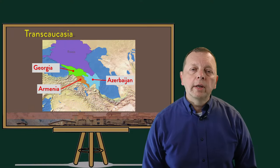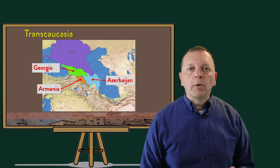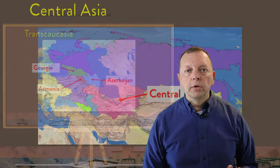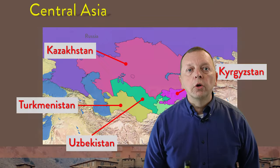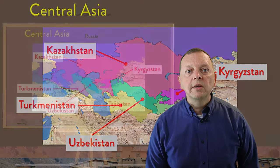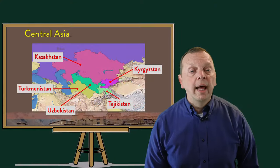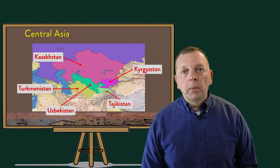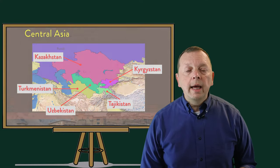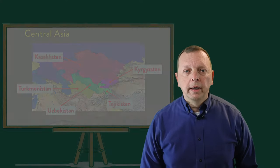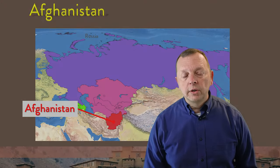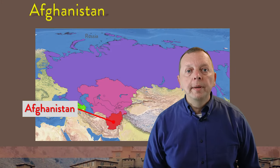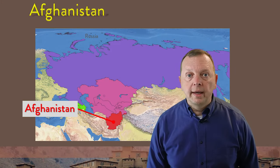We're also going to be looking at the five former republics of Central Asia, which are Kazakhstan, Turkmenistan, Uzbekistan, Tajikistan, and Kyrgyzstan. All of these former republics today are independent countries. And while it wasn't a Soviet republic, in our discussion on Central Asia, I'm going to be including Afghanistan.